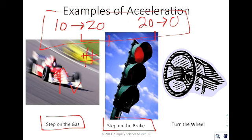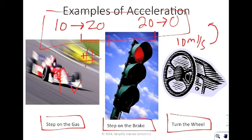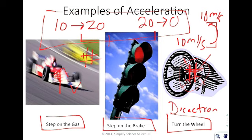You can also change velocity by changing direction, which is accomplished by turning the wheel. You could be going 10 meters per second, turn, and be going 10 meters per second in the opposite direction. There's no change in magnitude, but there is a change in direction. If either the direction or the magnitude changes, you've had an acceleration.